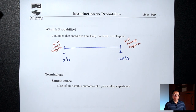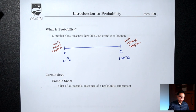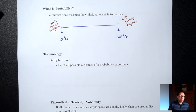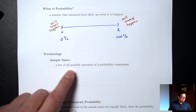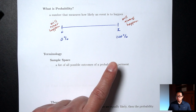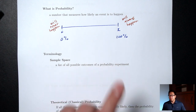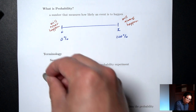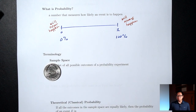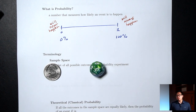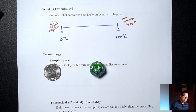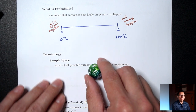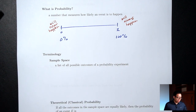So how do we actually compute probability? Before I tell you how, let me introduce some terminology. A sample space is a list of all the possible outcomes of a probability experiment. A probability experiment is just any process where we don't know for sure what's going to happen — like flipping a coin, rolling a die, or asking whether it will rain today. Even though we don't know for sure what's going to happen, we can list out everything that could happen, and that's called a sample space.